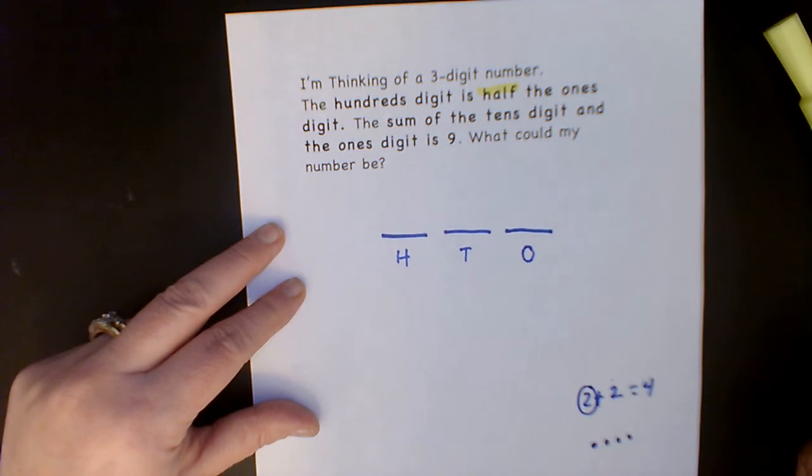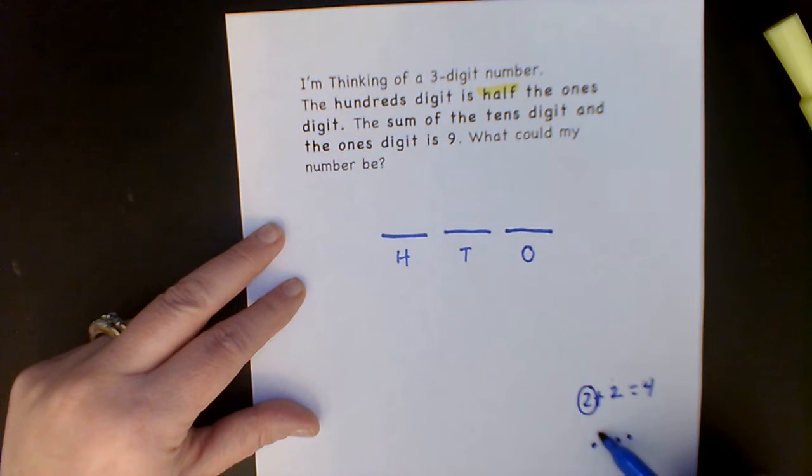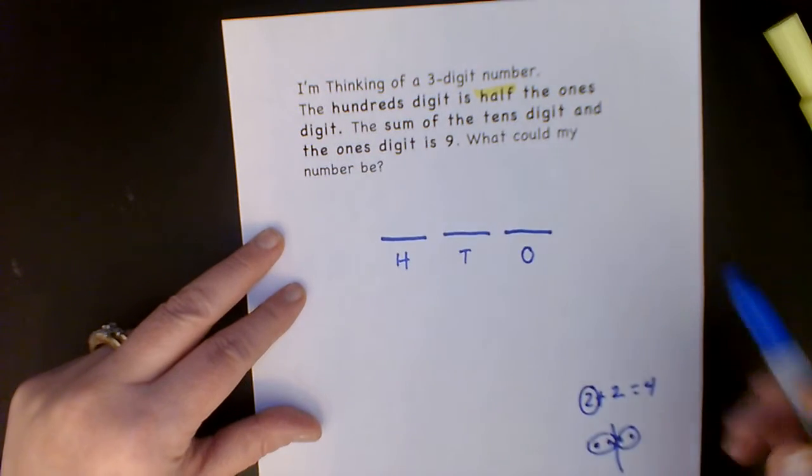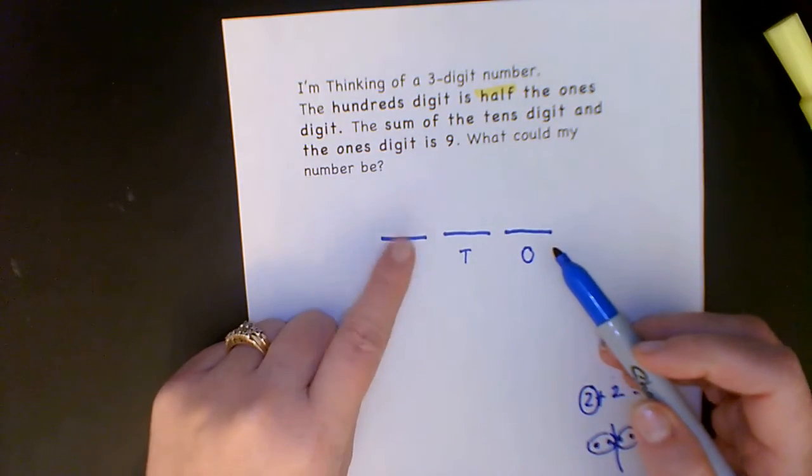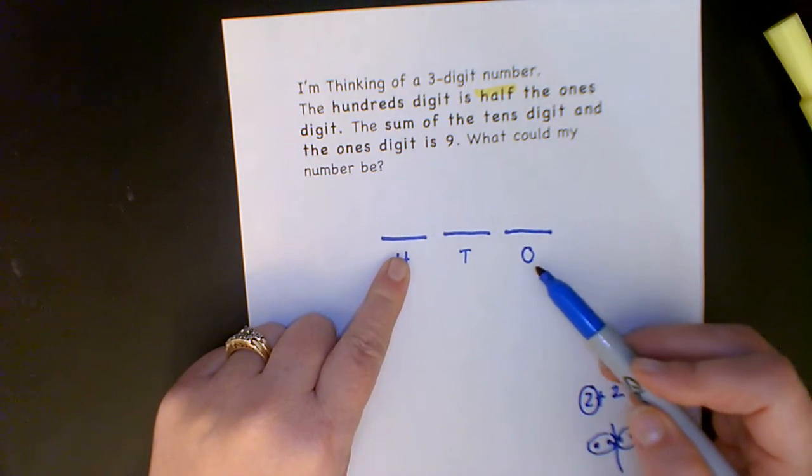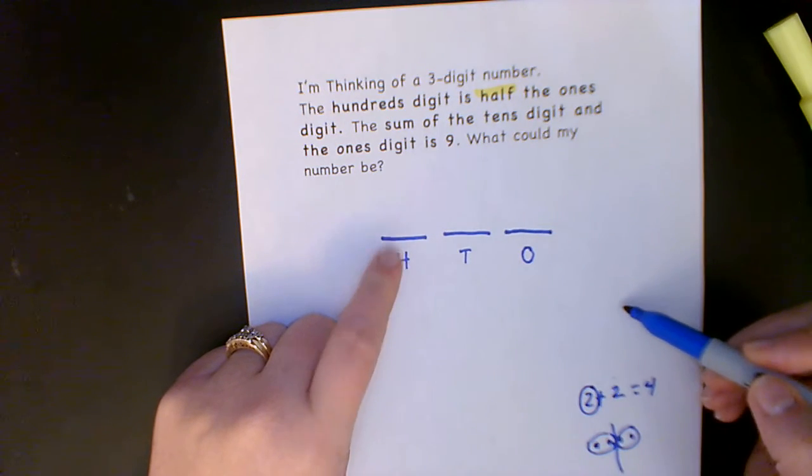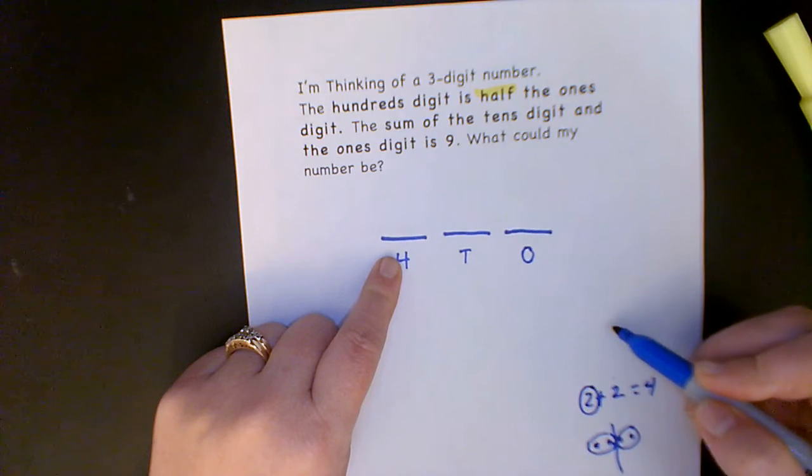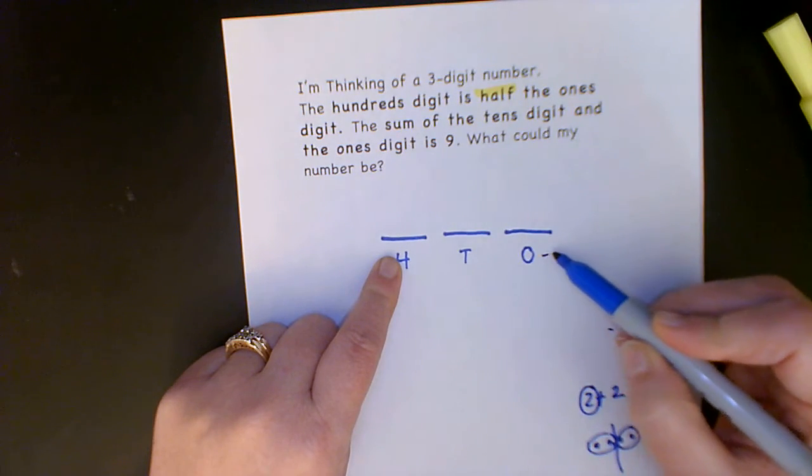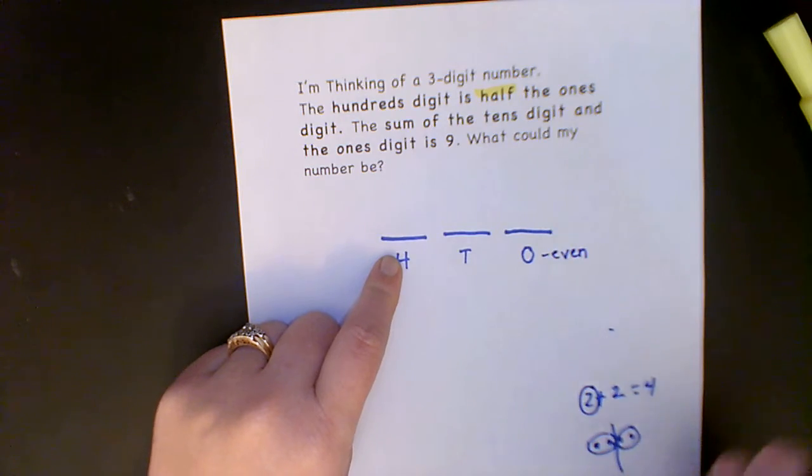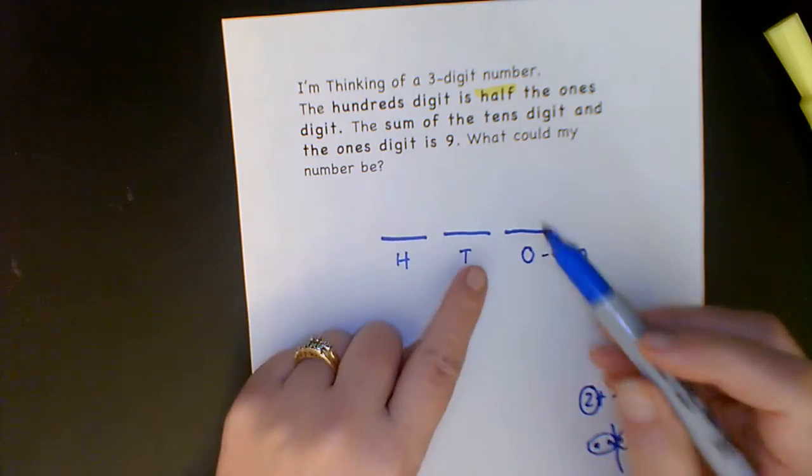All right, so another way to look at that—if I have four things, I can divide that into two groups of two, and so half, if I cut it down the half, is just two. Okay, so whatever I put in the hundreds needs to be half of what is in the ones. Now here's a little hint: when we're talking about half, we need to have an even number here so that we can cut it in half.